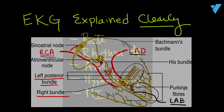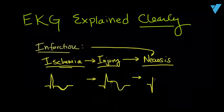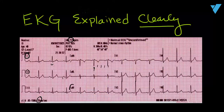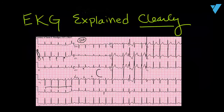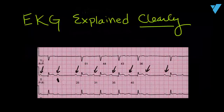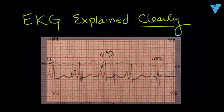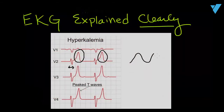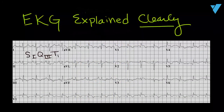At the end, we'll put it all together and teach you how to systematically read an EKG. We'll go through a normal one first, and then on to a variety of abnormal EKGs like sinus tachycardia, atrial fibrillation, multifocal atrial tachycardia, first, second, and third degree heart blocks, atrial enlargement, ventricular hypertrophies, hyperkalemia, rare anomalies, and many, many more abnormal EKGs.